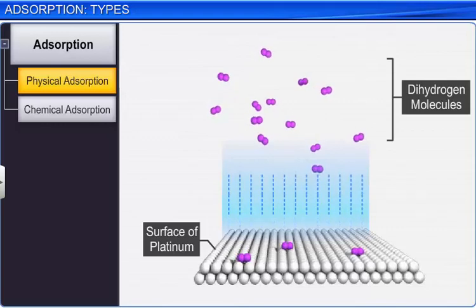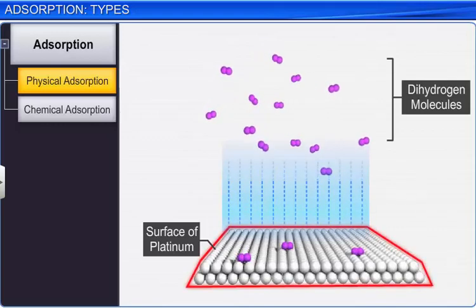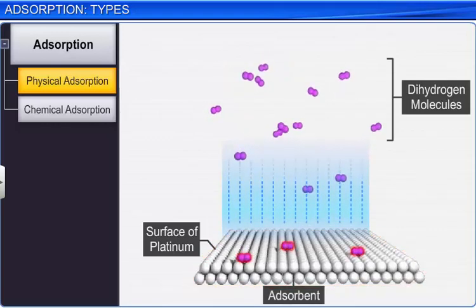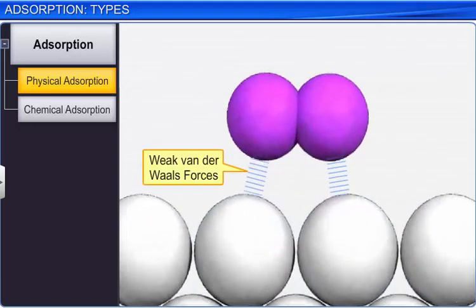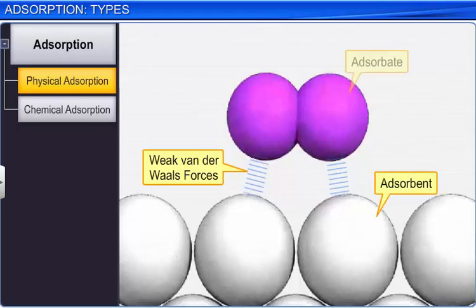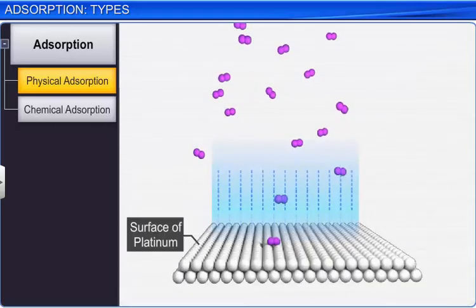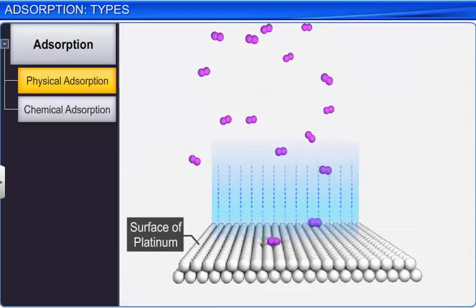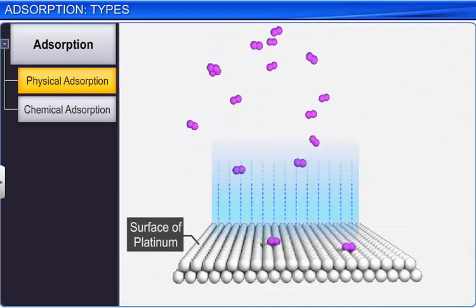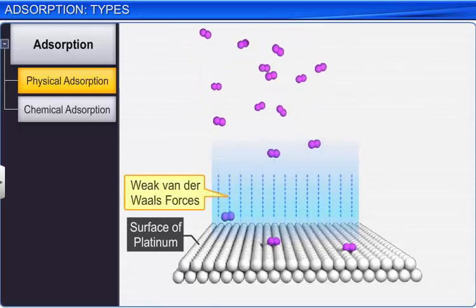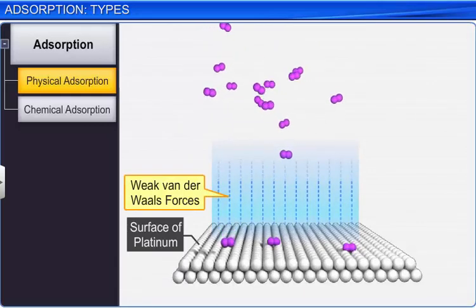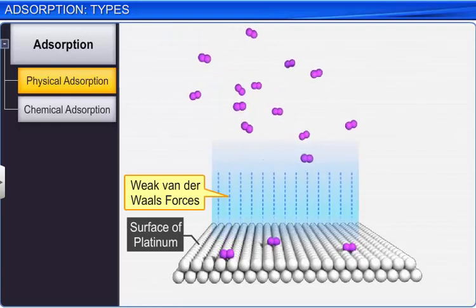In this example, platinum is the adsorbent and dihydrogen molecules are the adsorbate. There is no chemical bonding between the adsorbent and the adsorbate. Thus, physical adsorption occurs when a gas accumulates on the surface of a solid by Van der Waals forces without the formation of a chemical bond.